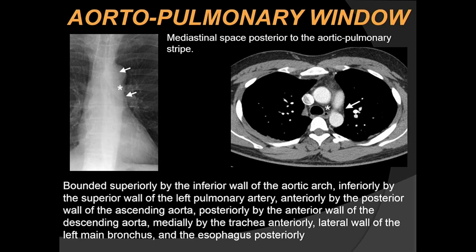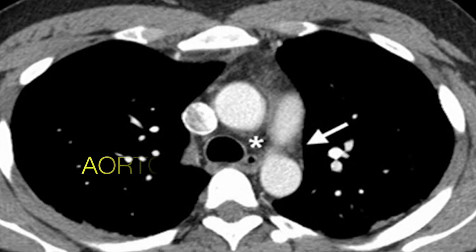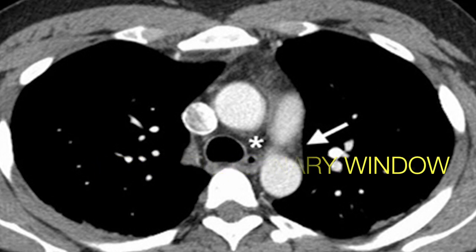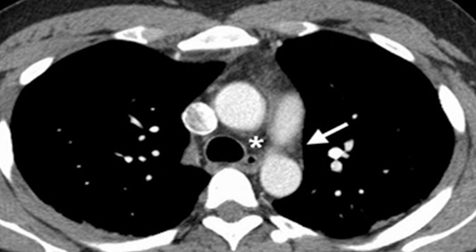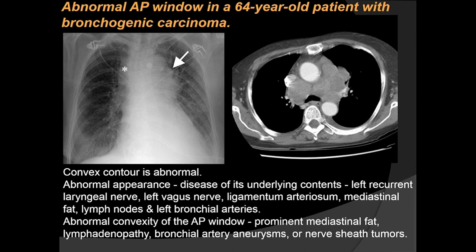The aortopulmonary window is the mediastinal space posterior to the aortopulmonary stripe. It is bounded superiorly by the inferior wall of the aorta, inferiorly by the superior wall of the left pulmonary artery, anteriorly by the posterior wall of the ascending aorta, posteriorly by the anterior wall of the descending aorta, and medially by the trachea anteriorly and the lateral wall of the left main bronchus and esophagus posteriorly. Here abnormal soft tissue in the aortopulmonary window correlates on CT with a large conglomerated lymph nodal mass secondary to bronchogenic carcinoma.